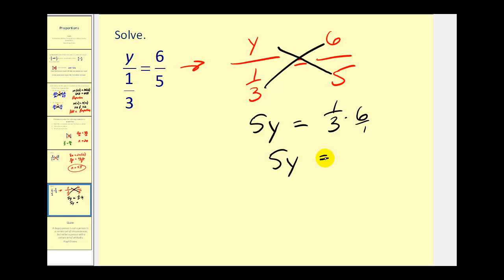So dividing both sides by 5, we have y equals 2-fifths.